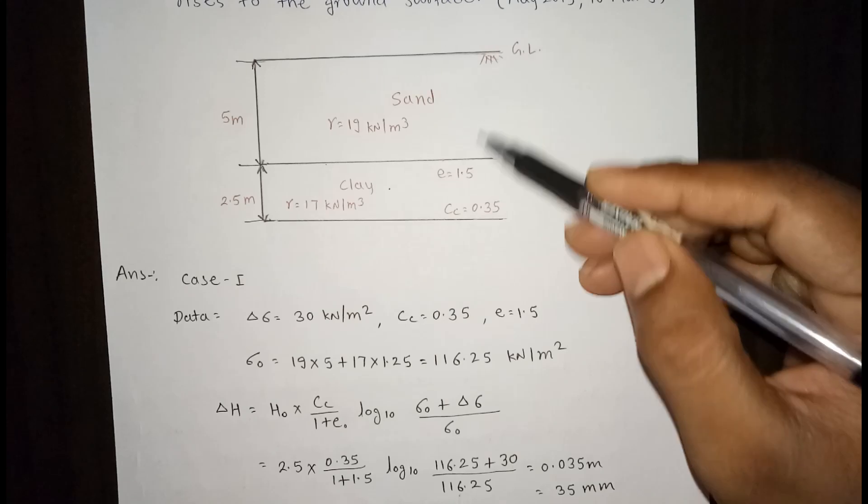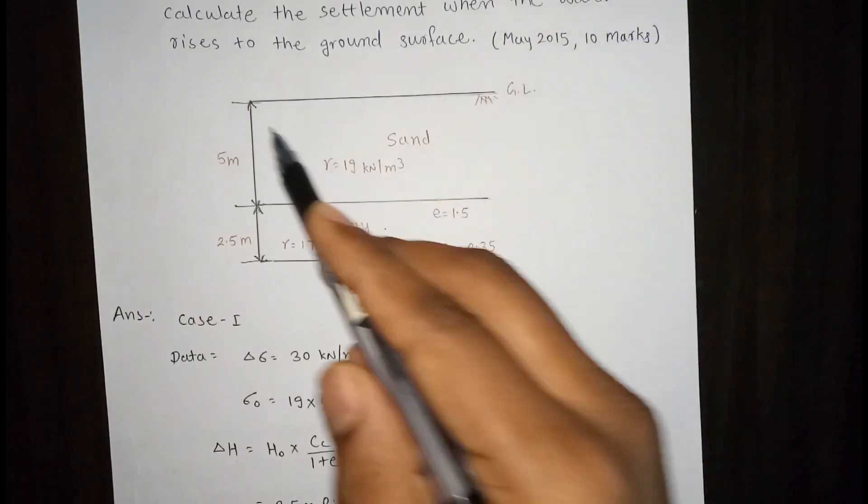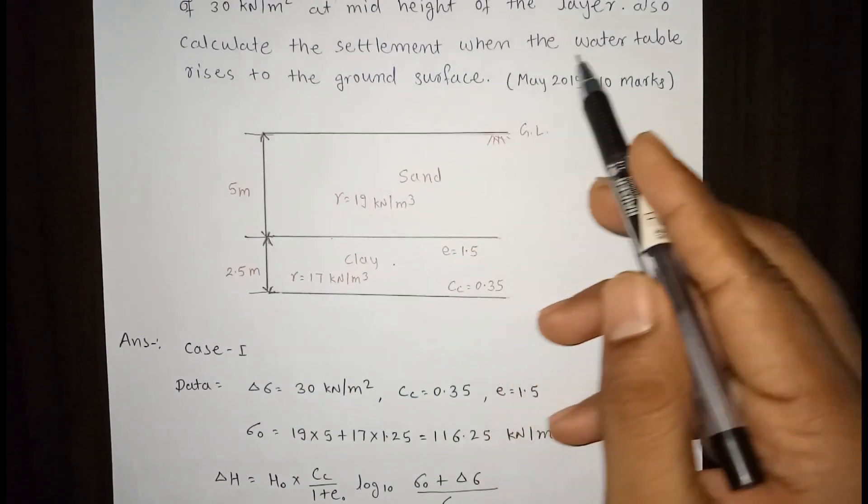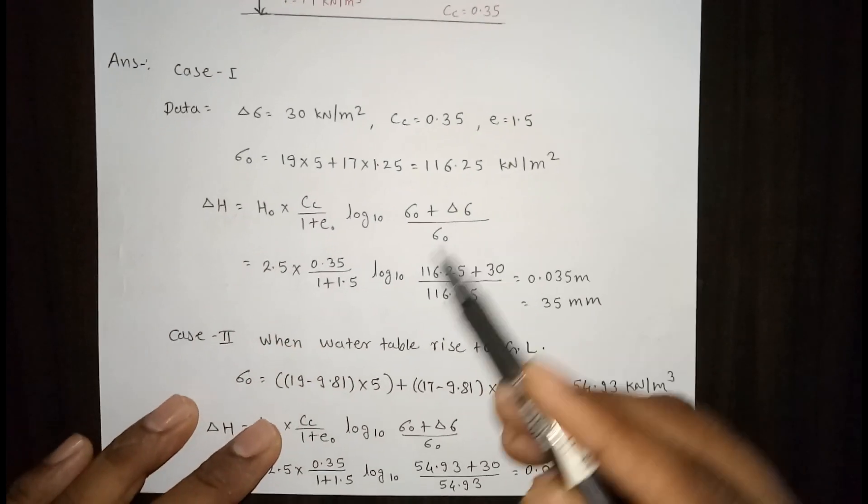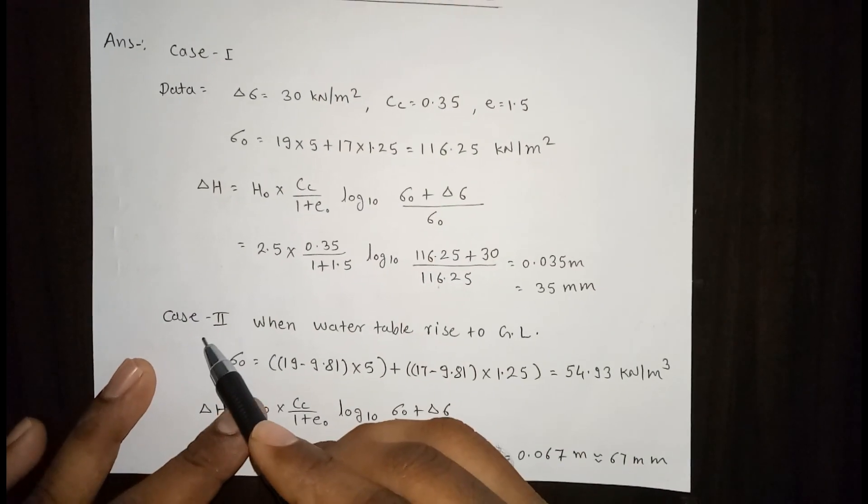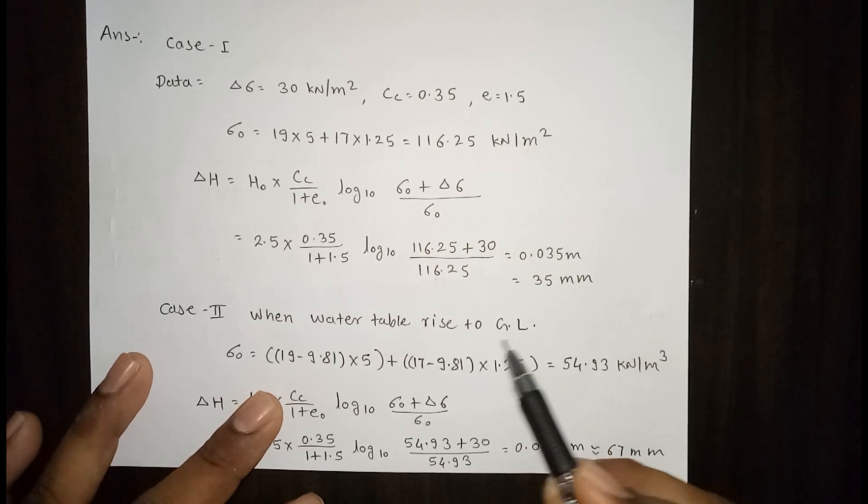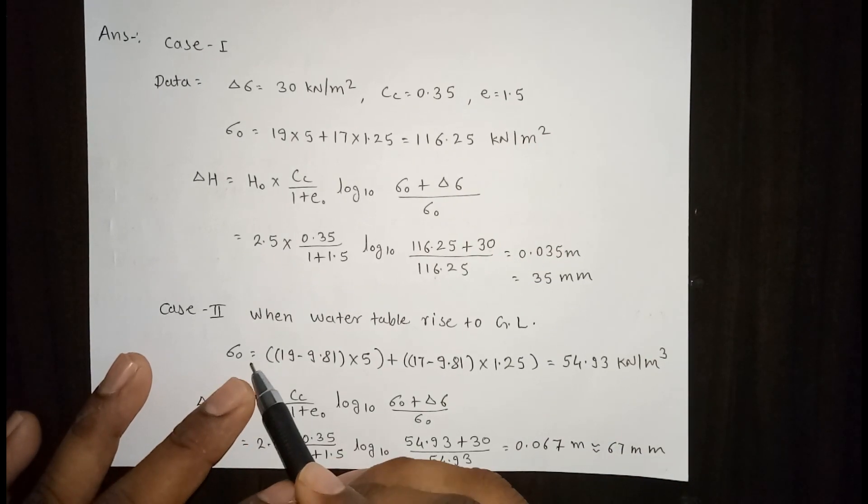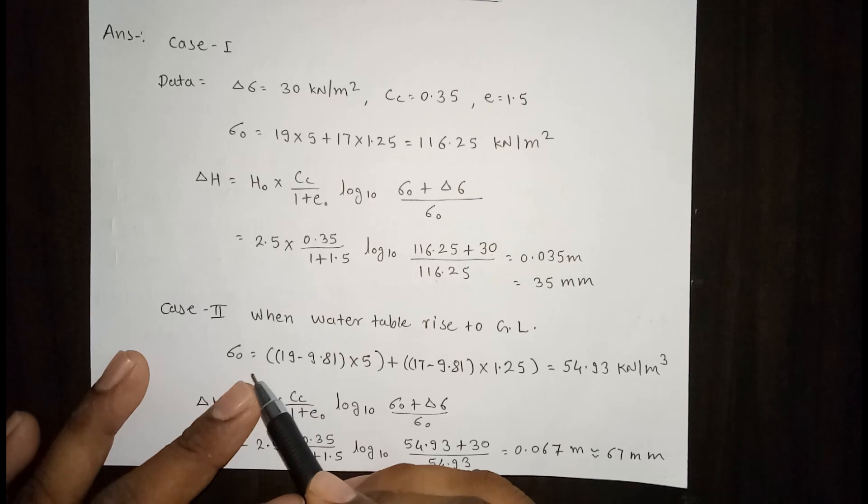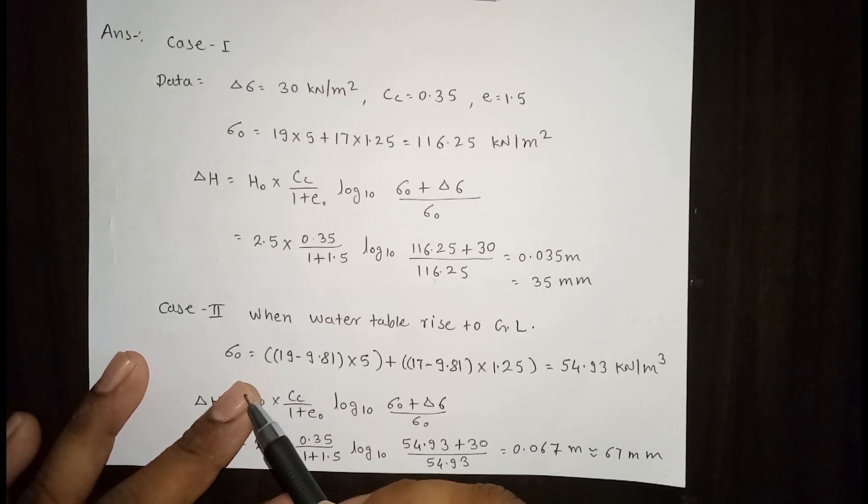Here we have not considered the water table. Now water table rises to the ground level. We have to consider the water table rise to the ground level. Case number 2, when water table rises to the ground level, then only sigma 0 will change. Now here we have to consider the submerged unit weight.